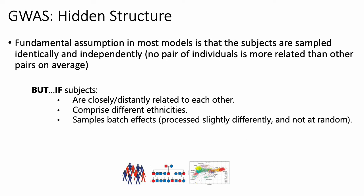Underlying a lot of these methods like line fitting is a fundamental assumption that each individual represented by a point is sampled identically and independently from each other — essentially the idea that no pair of individuals is more related than any other pair.